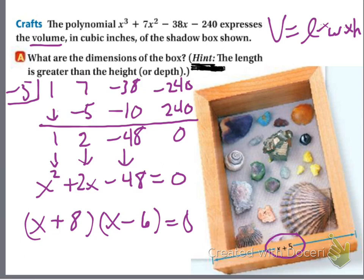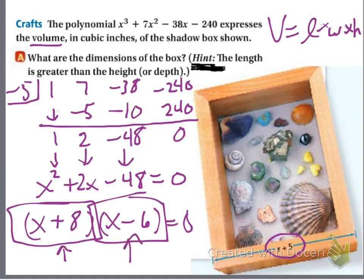So that means, let's see, it says the length is greater than the height or depth. Well, I don't really care about that. These are my dimensions. I'm not going to worry about what's greater than what. We're not going to solve for x, they just want to know the dimension. So that was one dimension, x plus 5 was a dimension. So we're not solving for x, we're just going to leave the factors as is. So your three factors are x plus 8, x minus 6, and x plus 5. When you get that zero remainder, what that means is that x plus 5 goes into this evenly with a zero remainder.